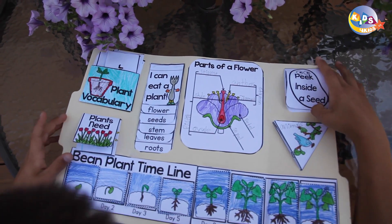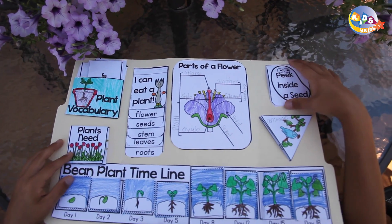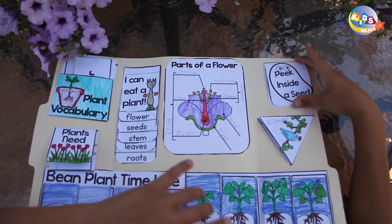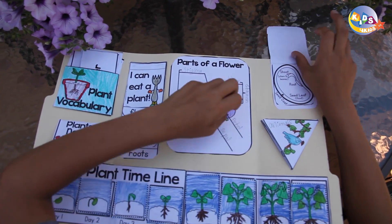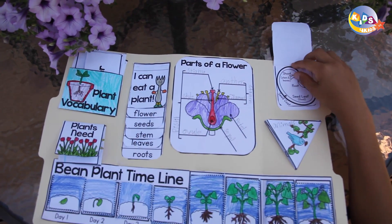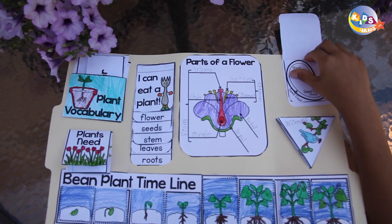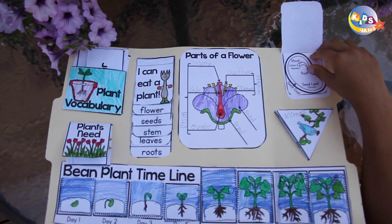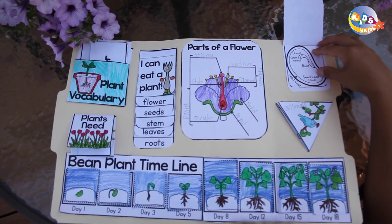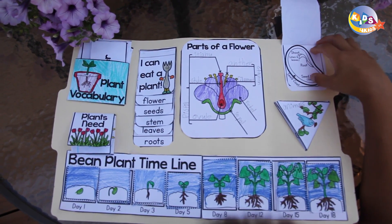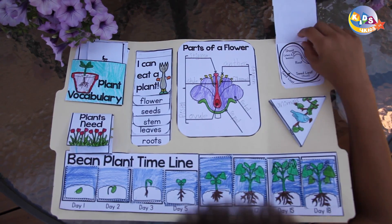And then here in the top right corner is 'Peek inside a seed,' which shows a shoot, stem and leaves, the root, seed leaf — that's food — and then the seed coat.